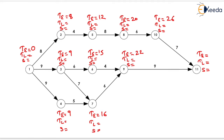For event 11, TE = max(26 + 7, 22 + 9) = max(33, 31) = 33. Similarly, we can find TL. If the TL value is not given for event 11, it will equal TE, so TL = 33. Slack equals the difference of TL and TE, so slack = 0.